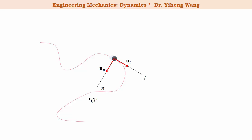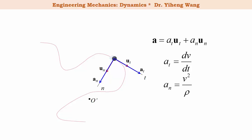Skipping the mathematical derivation, we can derive that acceleration always has two components: at, the tangential component, and an, the normal component. Therefore acceleration is written as a = at·ut + an·un. The tangential acceleration at equals dv/dt, and the normal acceleration an equals v²/ρ, where ρ is the radius of curvature at that location. Since at and an are perpendicular, the magnitude of acceleration is the square root of at² + an².